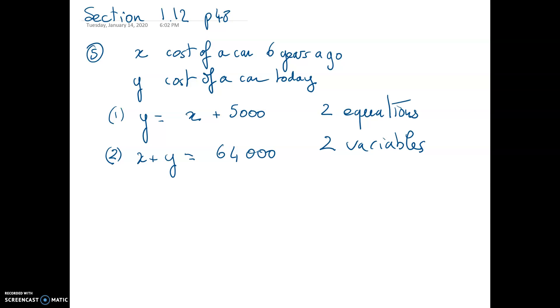Therefore, you can find x and y by substituting y from equation number one into equation number two. x plus x plus $5,000 equals $64,000.